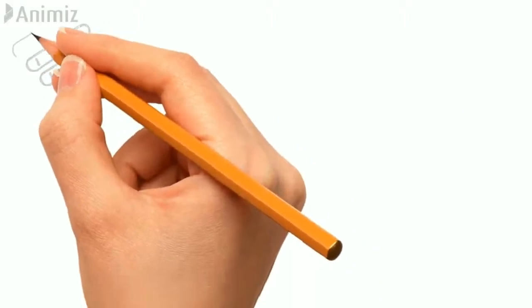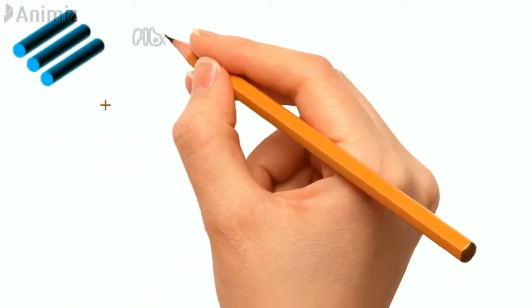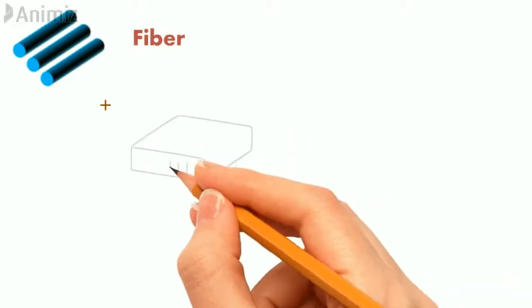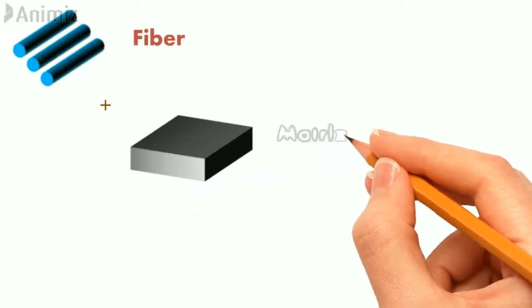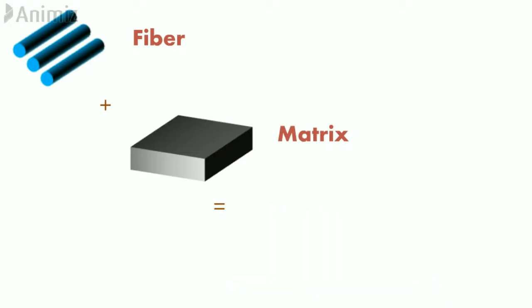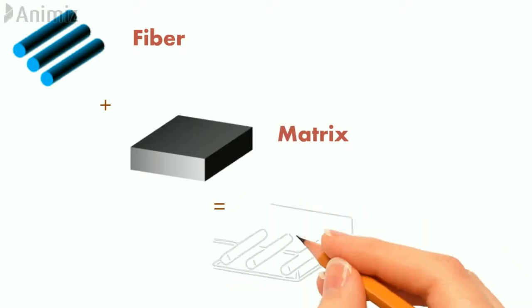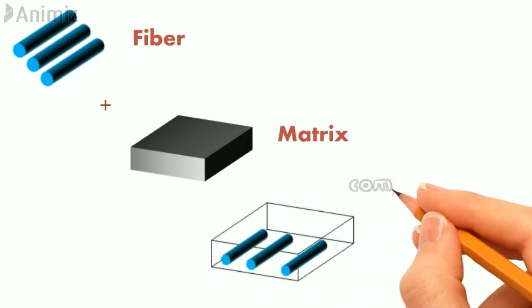Composite material consists of fiber, which is a discontinuous material that takes the load, which we call the reinforcement material. Another is a matrix material, which is a continuous material that gives shape and size to the composites. The combination of fiber and matrix gives you composite materials.